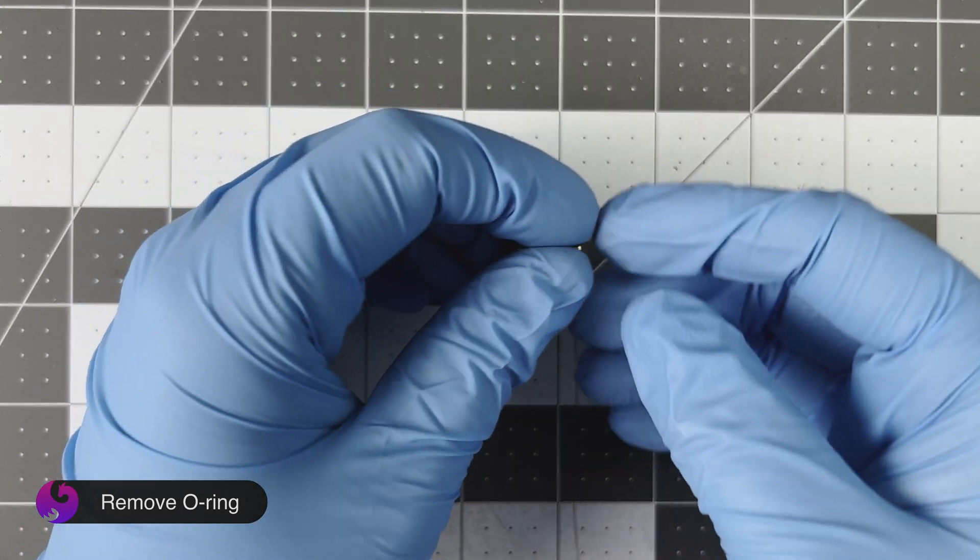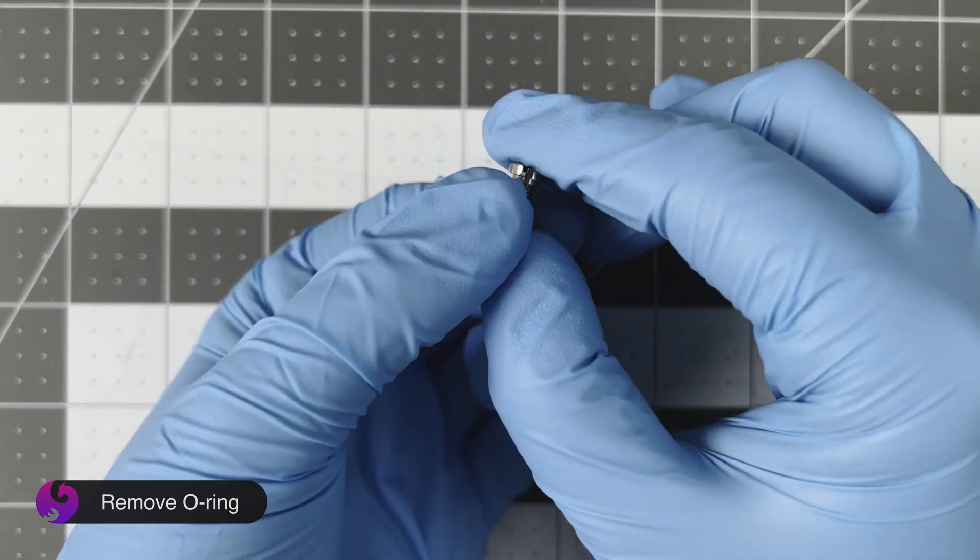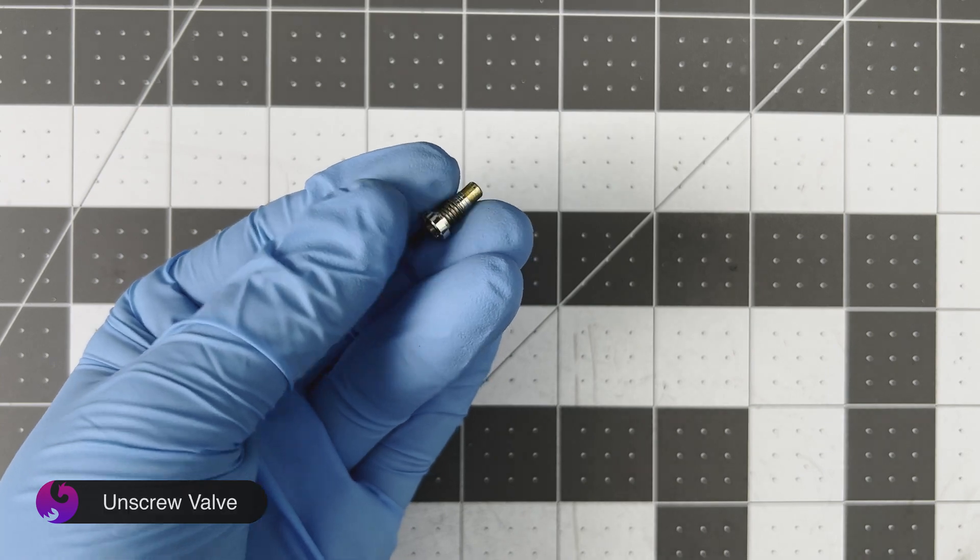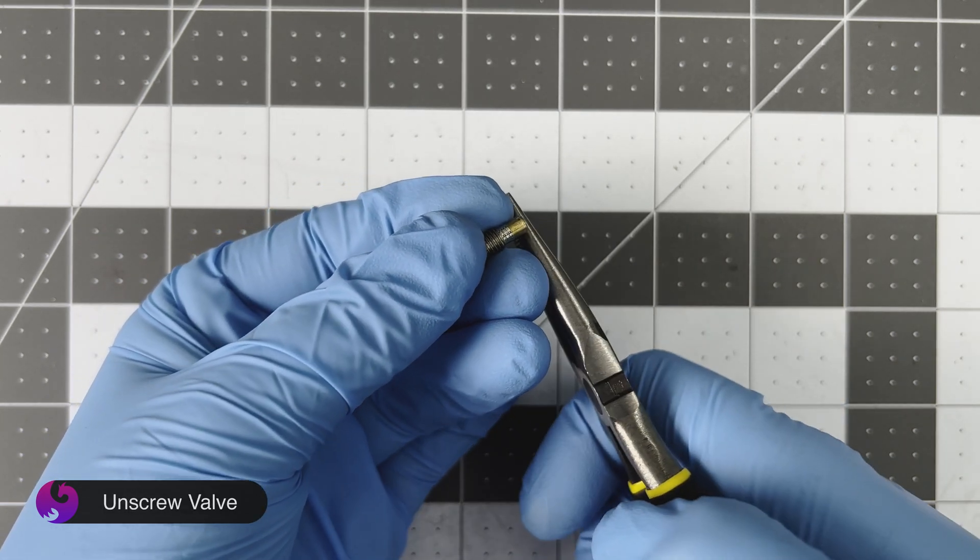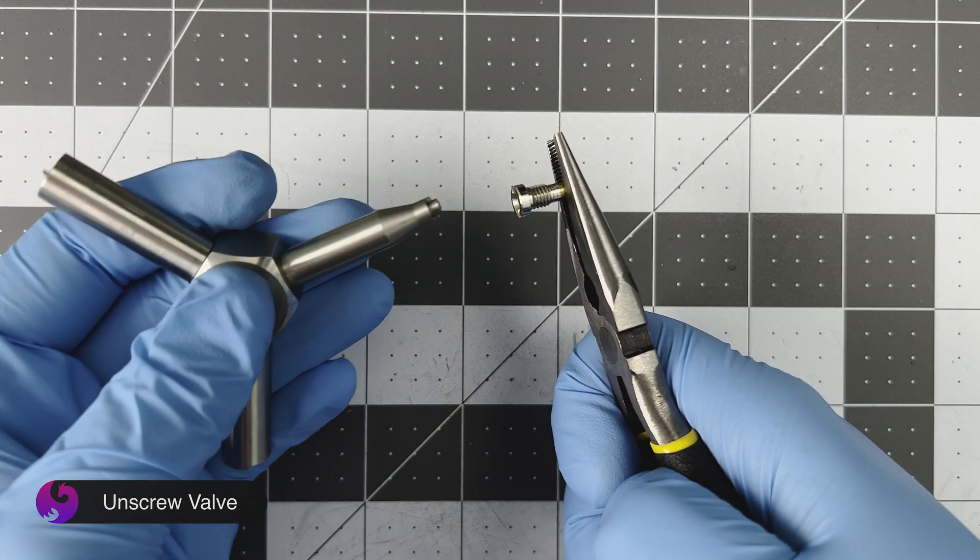Next, we're going to take a closer look at the fill valve. First, we should remove the old black O-ring on the outside. Then we need to hold the brass tip with our pliers or gripping tool and unscrew it from the rest of the valve with our valve tool.